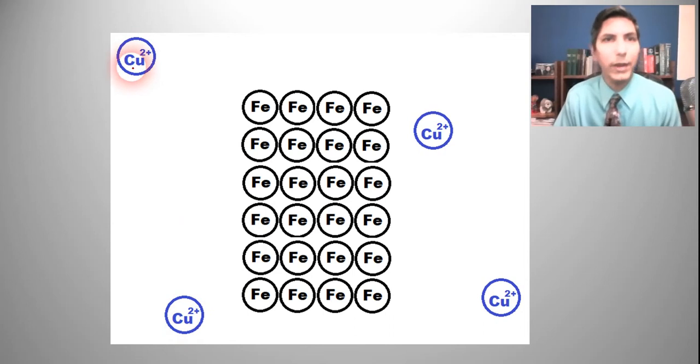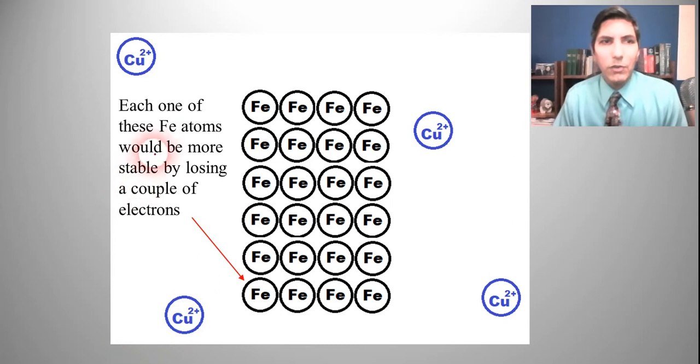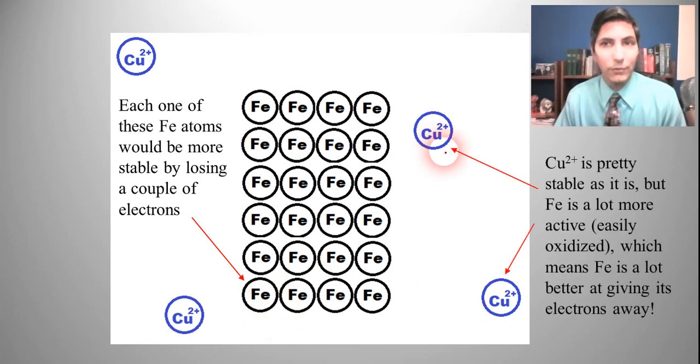Those will usually be blue, so I have those colored in blue. Well, we know that each one of these iron atoms would be a little bit more stable if it could lose a couple of electrons. And likewise, these copper ions, they're fairly stable, but they'd be a little bit more stable around iron if they could steal a couple of electrons from the iron atoms.